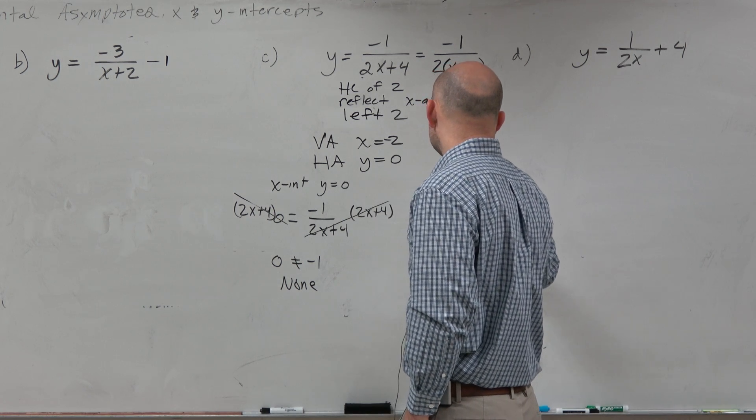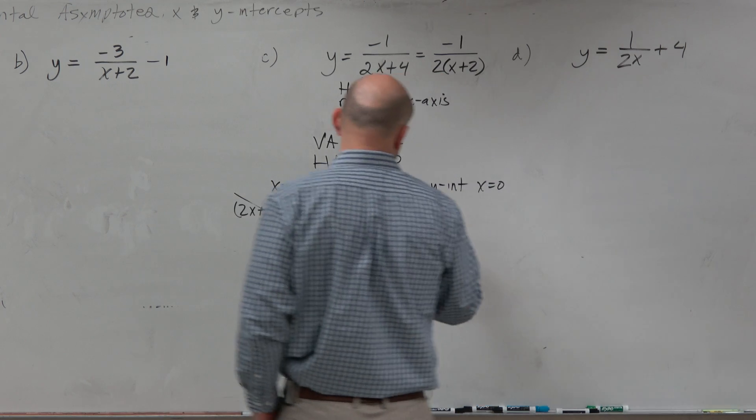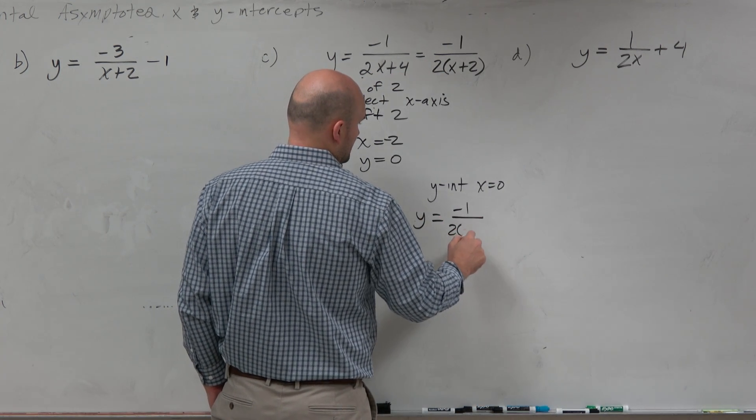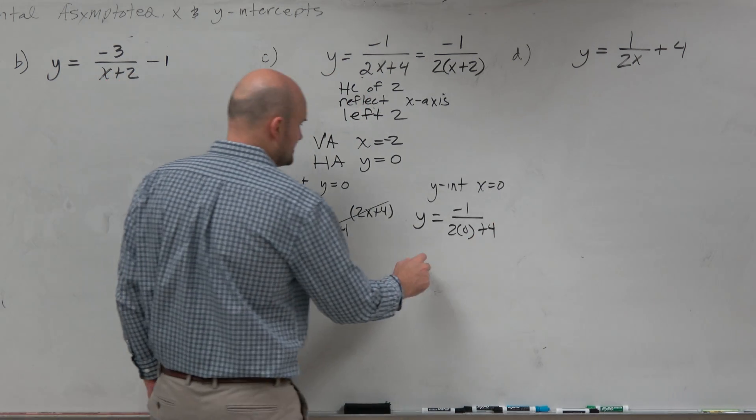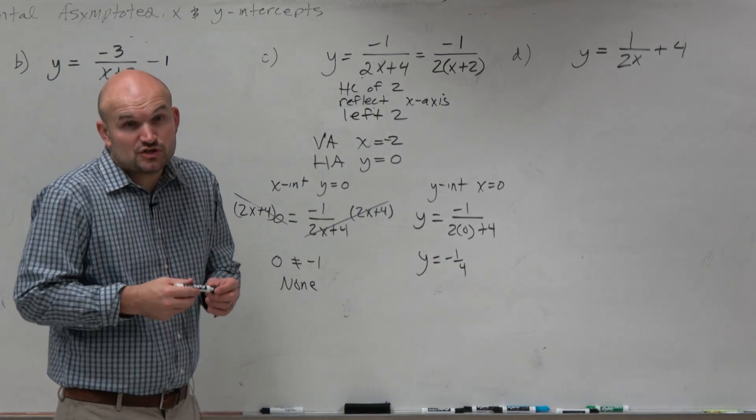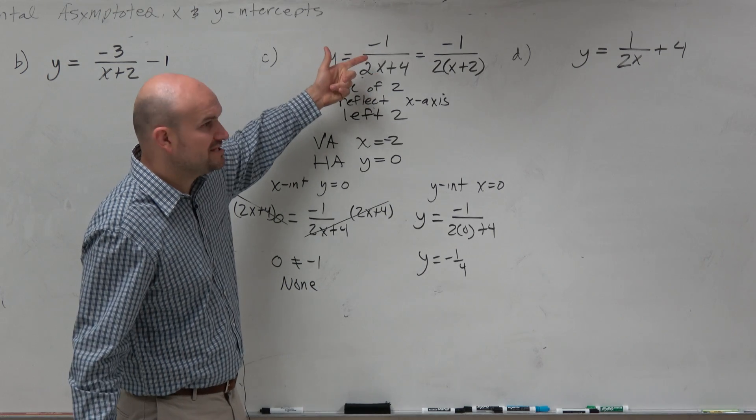The last one is the y-intercept, where x is equal to 0. So in this case, you're just going to replace x with 0. And you guys can see we get y equals negative 1 fourth. And again, another trick for this is any time you plug in 0, that's going to be 0, right?